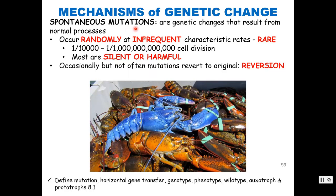Spontaneous mutations are genetic changes that result from a normal process. DNA polymerase has proofreading ability but it makes mistakes — sometimes you miss those typos. Spontaneous mutations occur randomly at infrequent but characteristic rates, called the mutation rate: the probability of mutation of a given gene per cell division, usually about 1 in 10,000 to a trillion. Most mutations are not good — at best they're silent, usually they're harmful, but occasionally they're beneficial. Occasionally, mutations can also revert back to the original DNA sequence, called reversion.